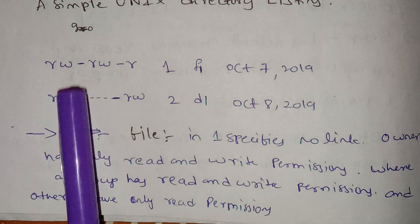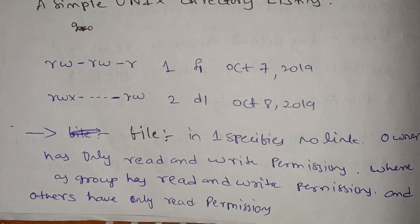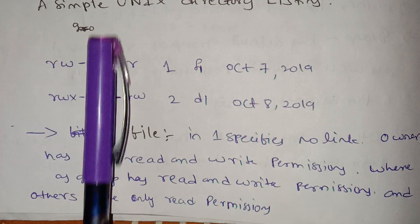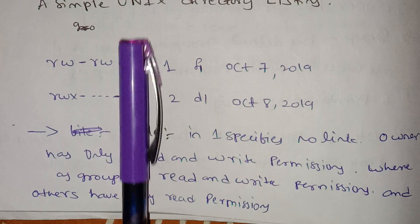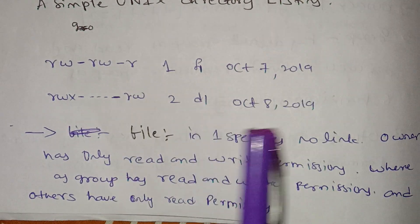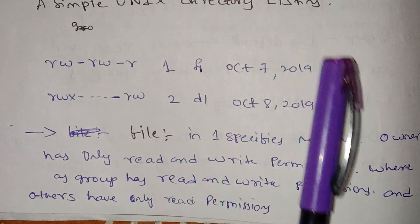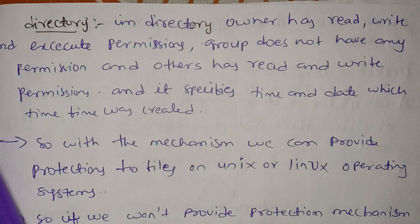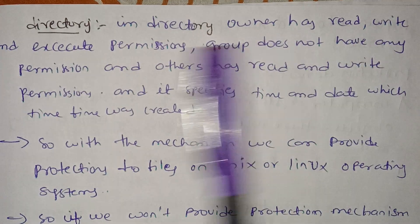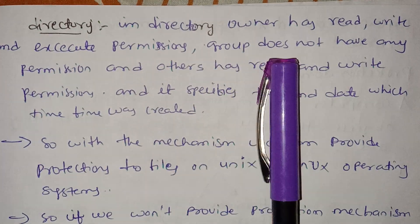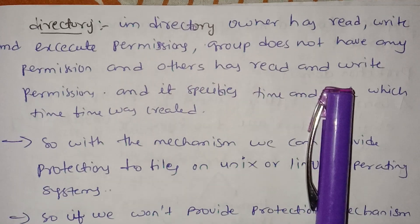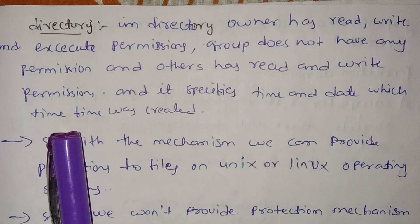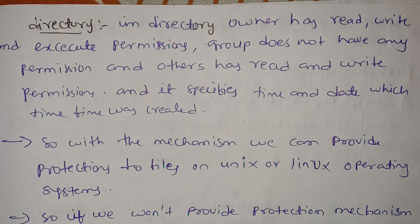For the owner, if they want to make a read and write operation, the group also has read and write operations. Others have only read operations. For a directory, the owner has read, write, and execute permissions. The group does not have any permissions. Others have read and write permissions. It also specifies the date and time the file was created.